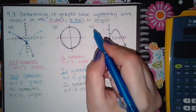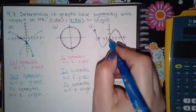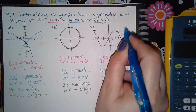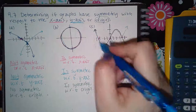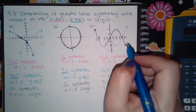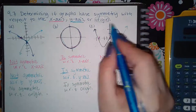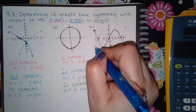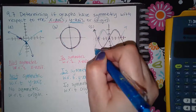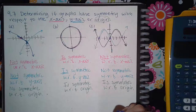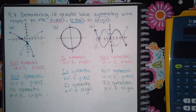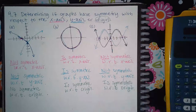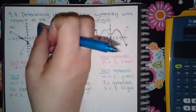For graph C: I take what is on the left-hand side and reflect it over — it's going to look like a W — and then take what is on the right-hand side and reflect it over. Does the blue land on top of the original? No it does not, so this is not symmetric with respect to the y-axis.